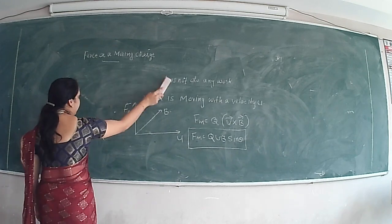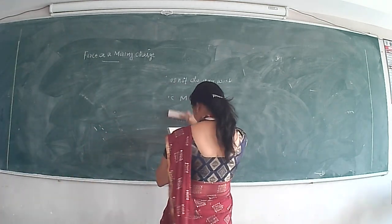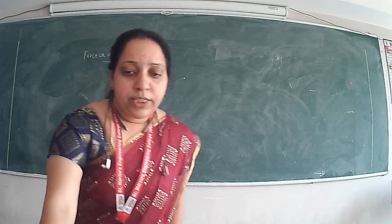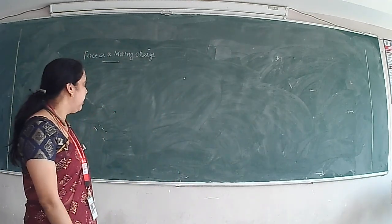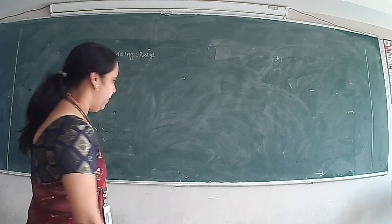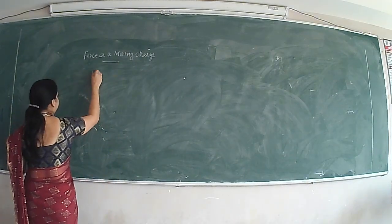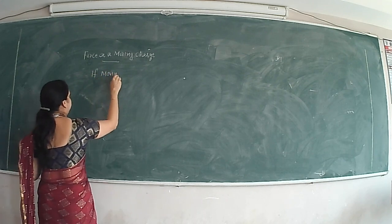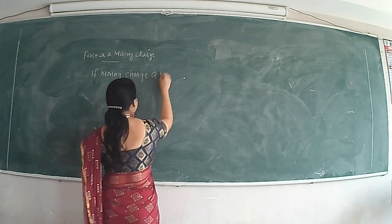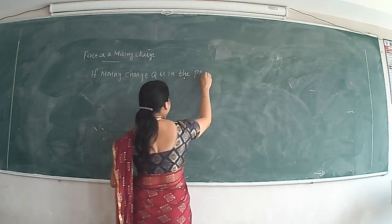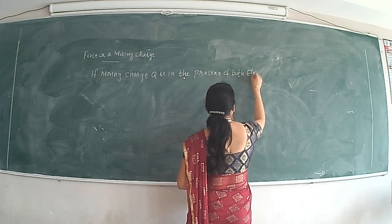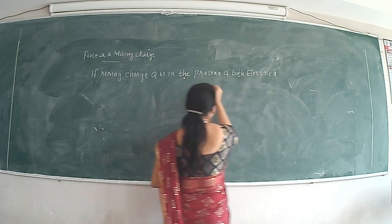Now we derive the Lorentz force equation. It is the combination of forces: if the charge experiences a force due to the electric field and a force due to the magnetic field, then we consider a moving charge Q in the presence of both electric and magnetic fields.